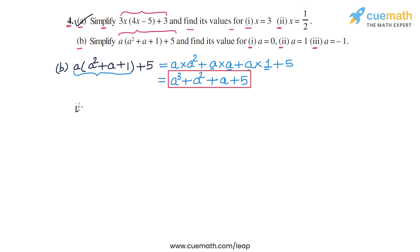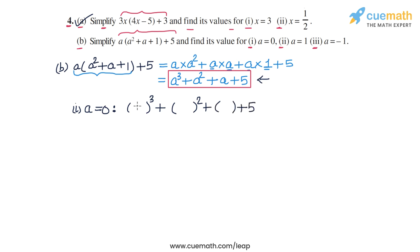We now find the value for each given value of a. For a equal to 0, substituting into a cubed plus a squared plus a plus 5, we get 0 cubed plus 0 squared plus 0 plus 5. Since 0 cubed is 0 and 0 squared is 0, the value of the expression for a equal to 0 is 5.